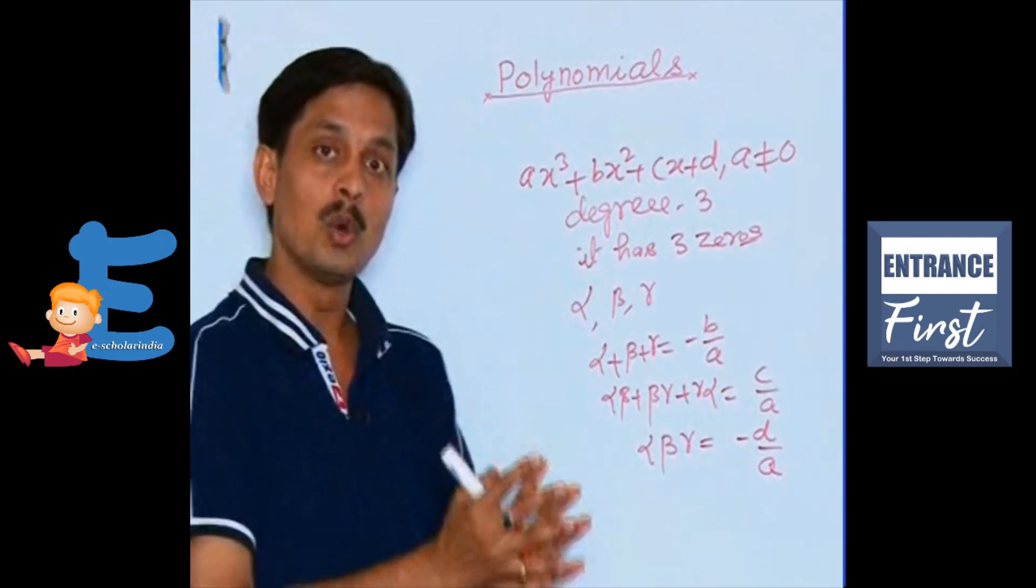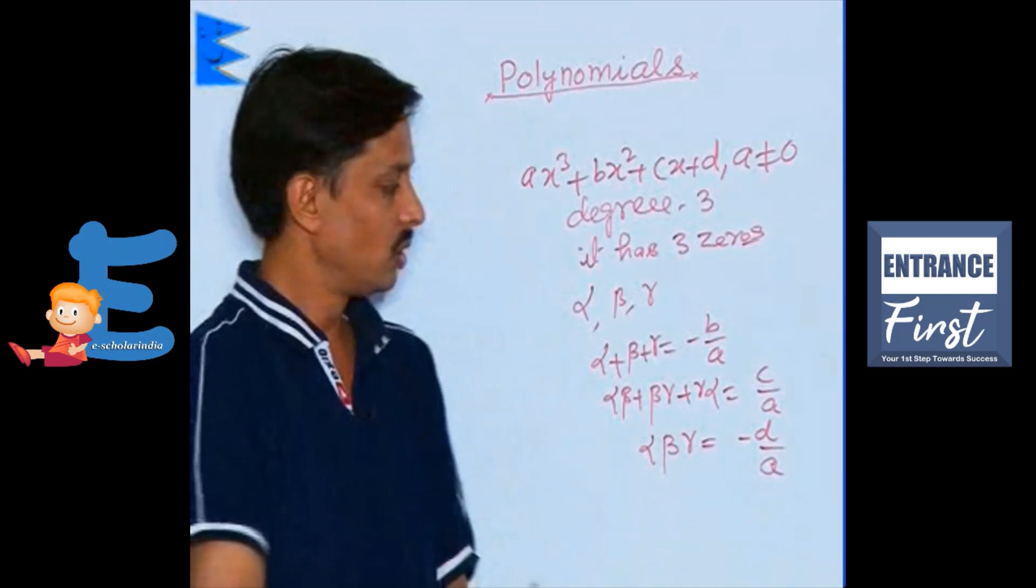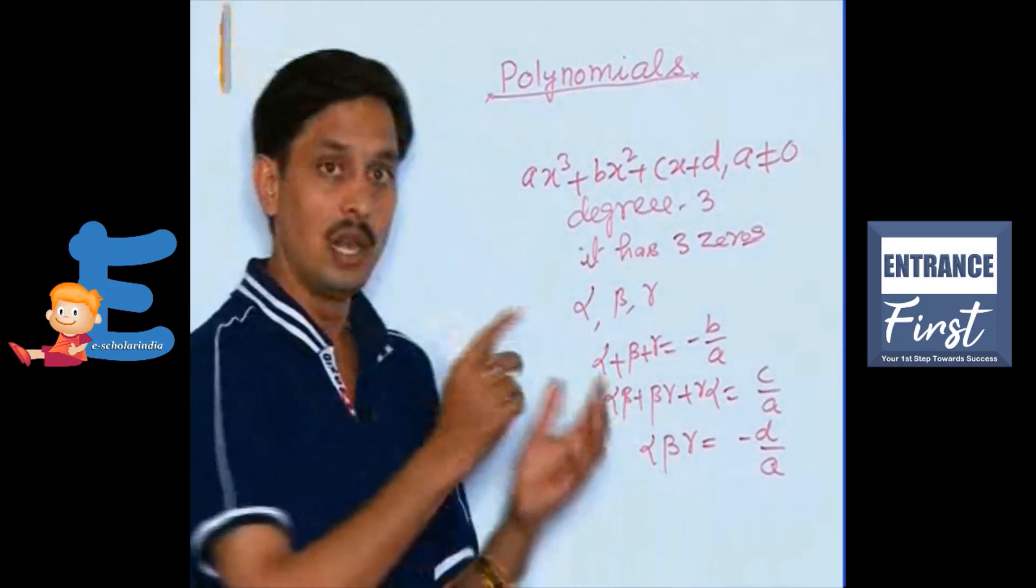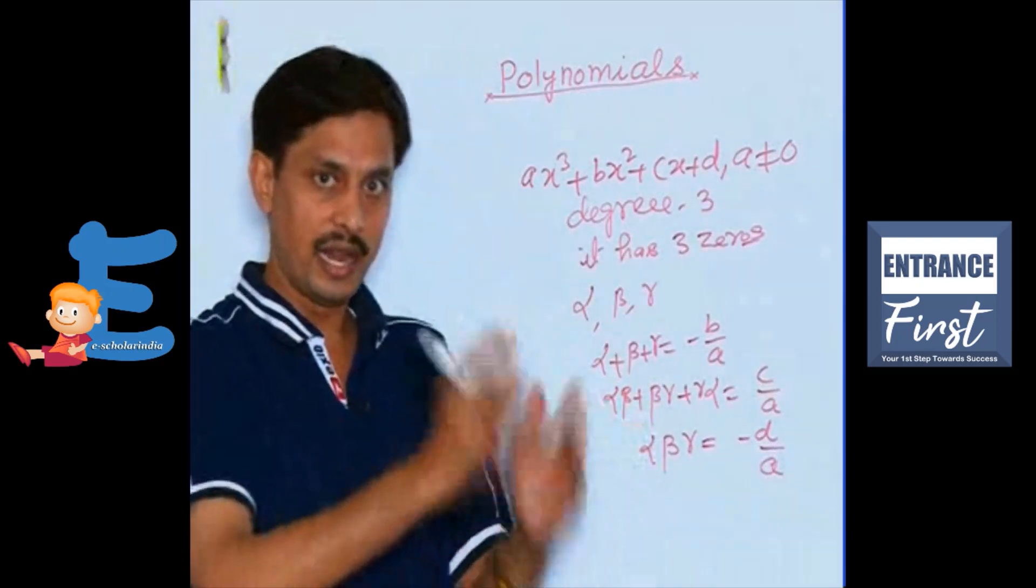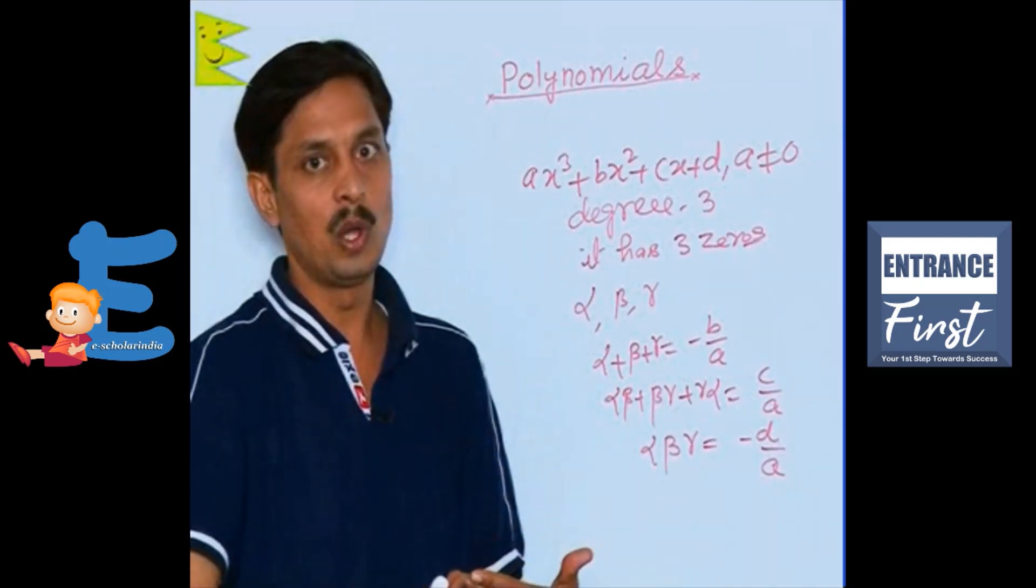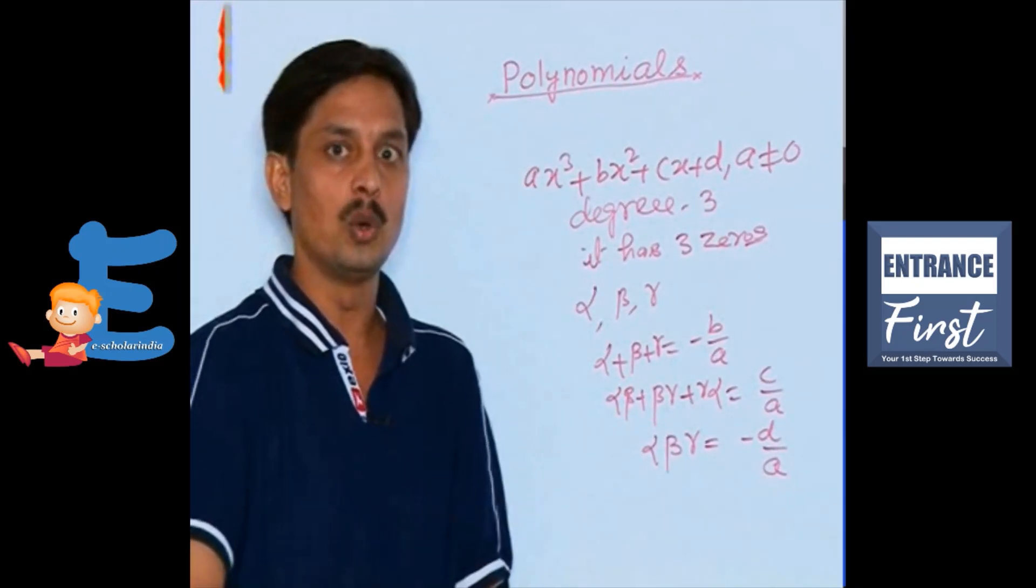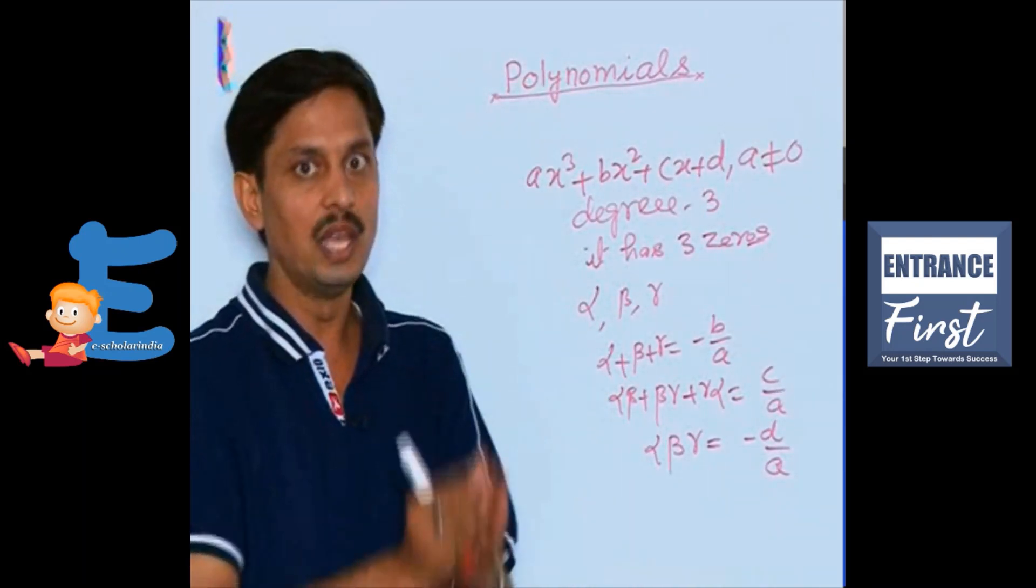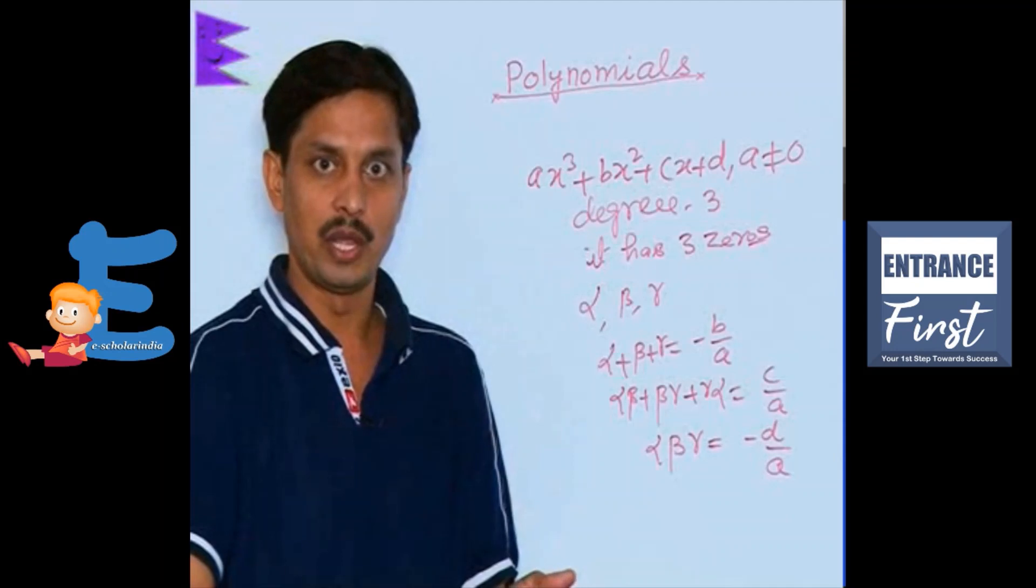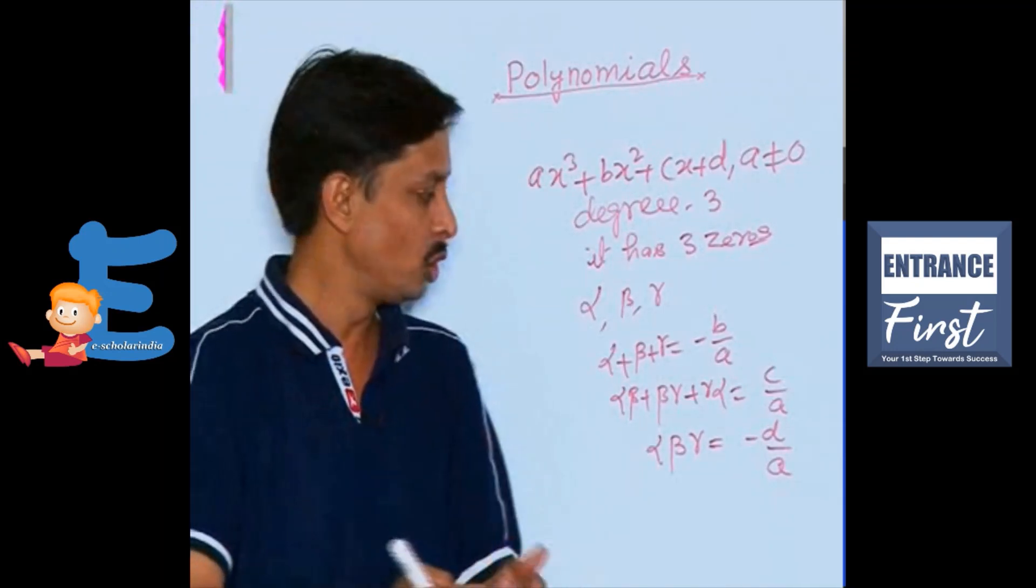As a cubic polynomial has 3 zeros, it has 3 relations between the coefficients and zeros. In the previous case, quadratic polynomial has degree 2, 2 zeros, so there were 2 relations: sum of zeros minus B upon A, product of zeros C upon A. It has 3 degrees, 3 zeros, so there are 3 relations.